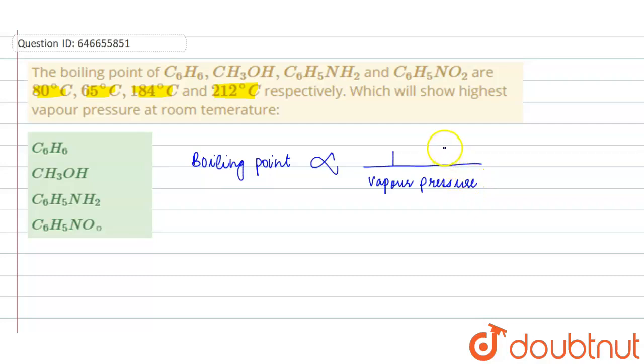That means lower the boiling point, higher will be the vapor pressure. So among them 65 degrees Celsius is the lowest boiling point, which is of CH3OH. So it will have the highest vapor pressure at room temperature because its boiling point is lowest.